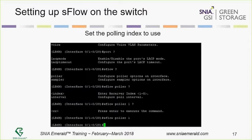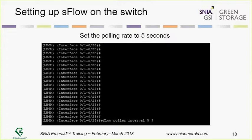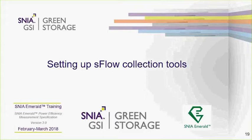Now I need to tell it what interval to collect on. This particular switch can have multiple timers running. I created a poller named number one and set it to collect data every five seconds. The spec says 10 seconds, but I like to have more samples — I can always throw some away. And that's it — your switch is now configured. As data flows through the switch, it will create these samples and send them to the collector.